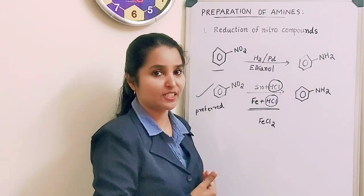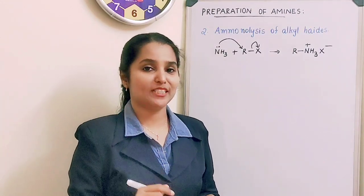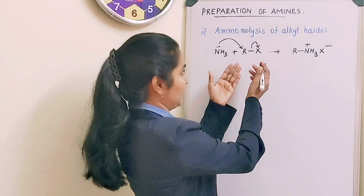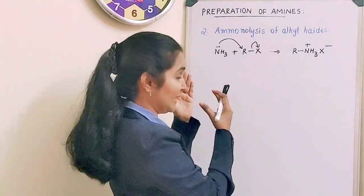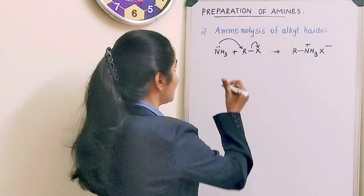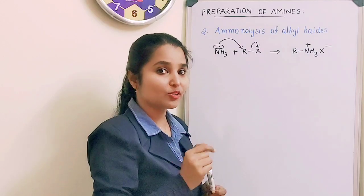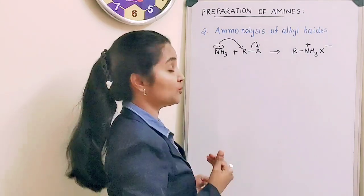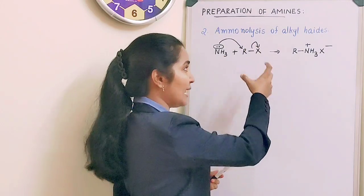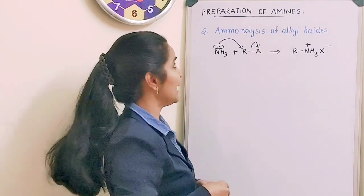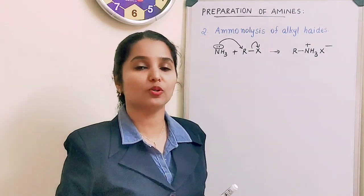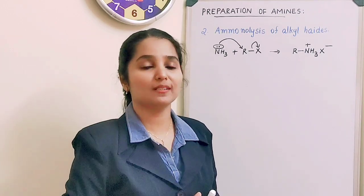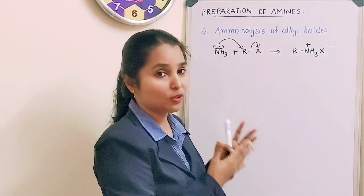That was the first method of preparation of amines. Now let's see the second method — ammonolysis of alkyl halides. We make use of ammonia (NH₃) as a nucleophile. It carries a lone pair of electrons, making it a nucleophile. We use this nucleophile to break the C-X bond of the alkyl halide (RX) to form a primary amine. This method can be used to prepare primary, secondary, tertiary amines, and quaternary ammonium salts.